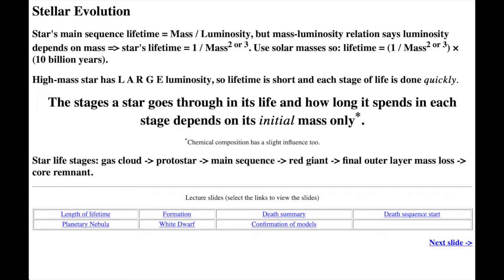Stars are the same way. The amount of fuel for nuclear fusion is proportional to the total initial mass of the star. The consumption rate is simply the star's luminosity, so the star will live as a main sequence star for an amount of time equal to the mass divided by the luminosity.